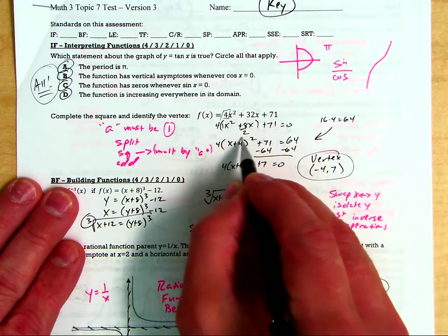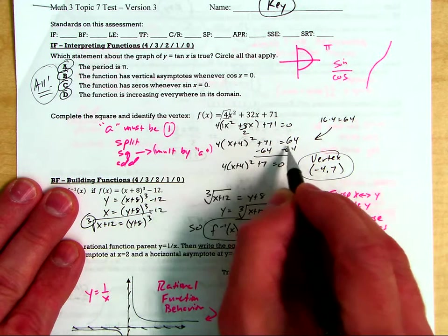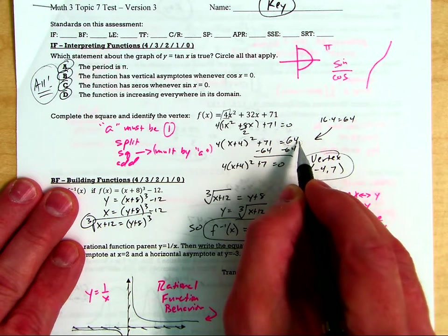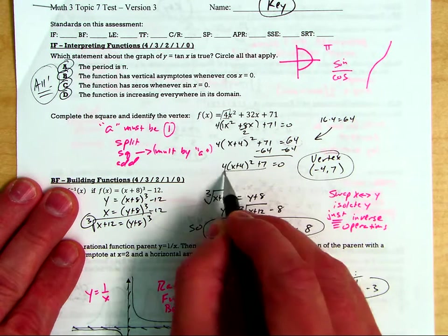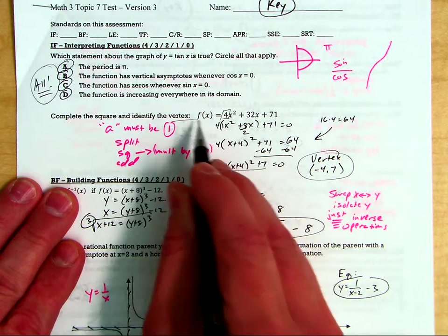But when you're adding this 16, are you only adding 16? No, you're adding 16 times 4 which is 64. And then remember vertex form is everything on the left side to identify the vertex, remember h lies.